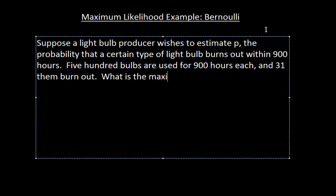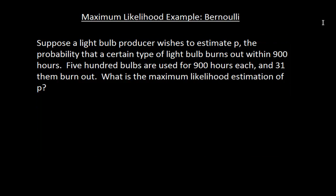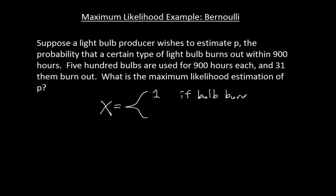So what is the maximum likelihood estimation of P? I'm going to switch over to my pen pad. First of all, let's talk about a random variable. This is going to be a Bernoulli random variable because we're talking about whether or not a bulb burns out. All 500 are copies of the same thing. We give this random variable a value of 1 if the bulb burns out within 900 hours and 0 otherwise.